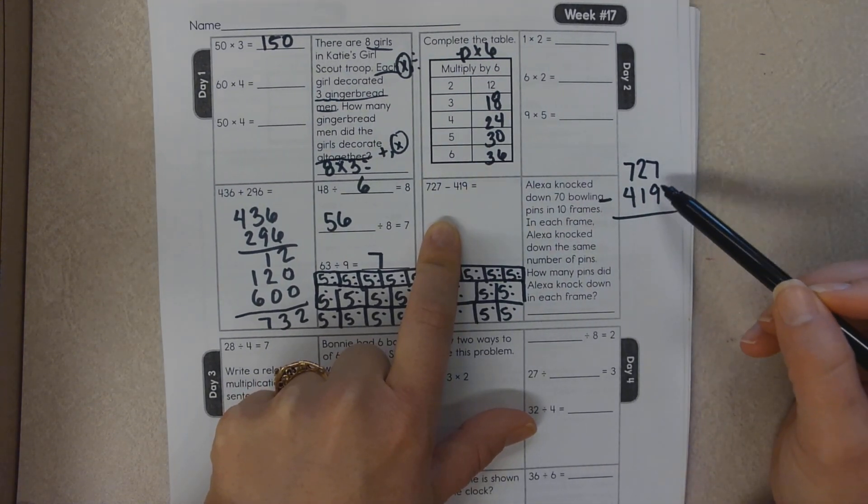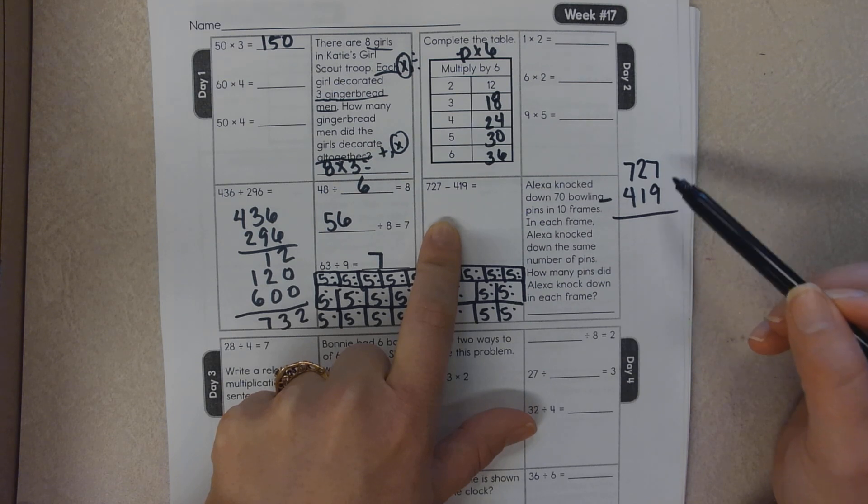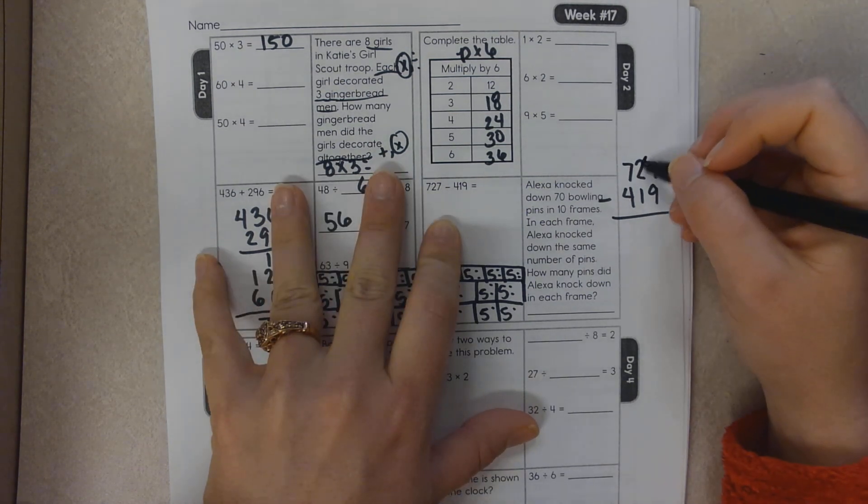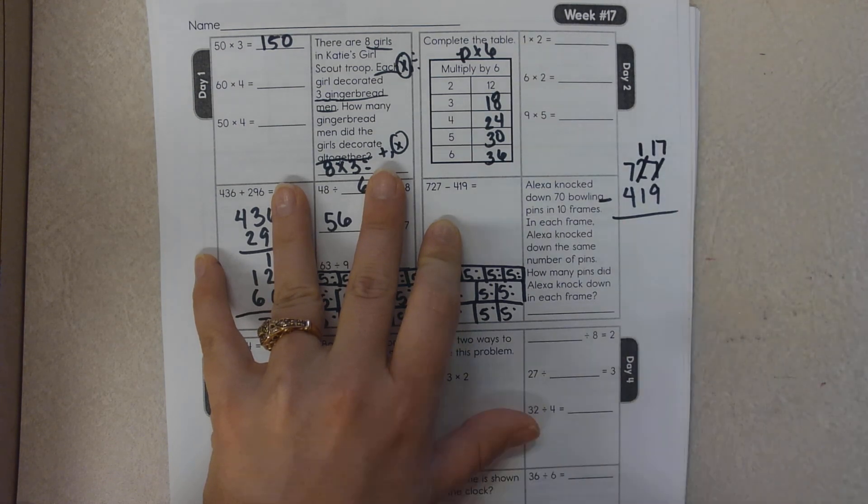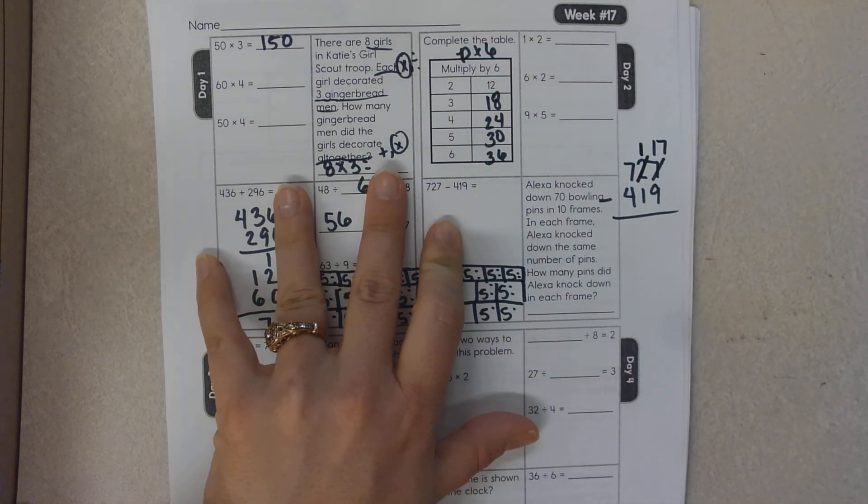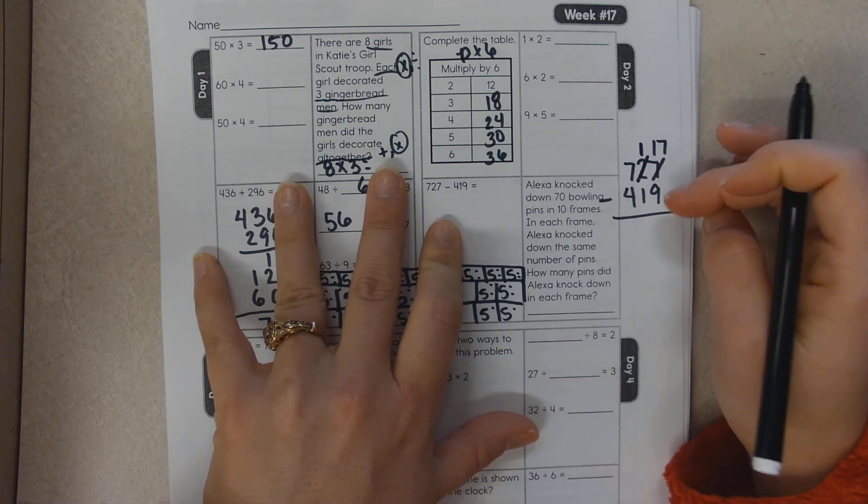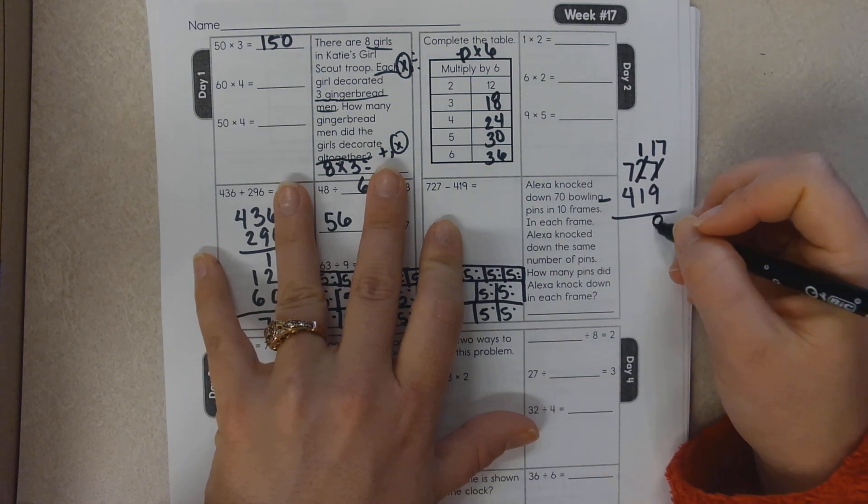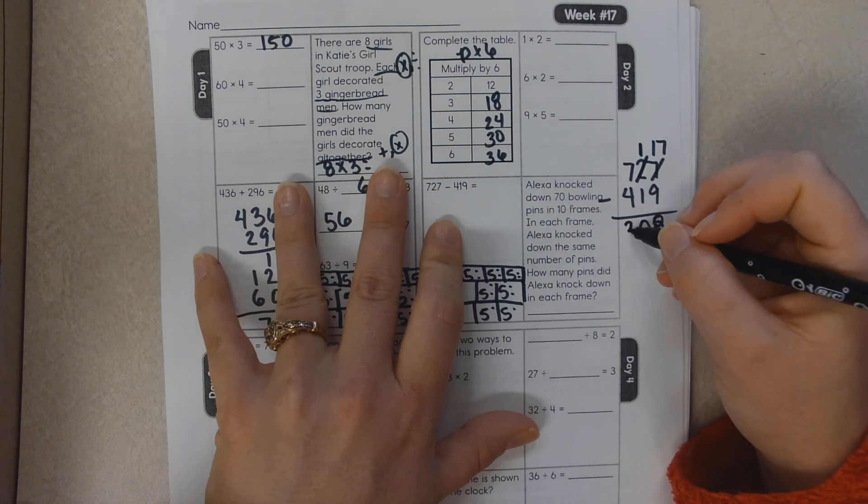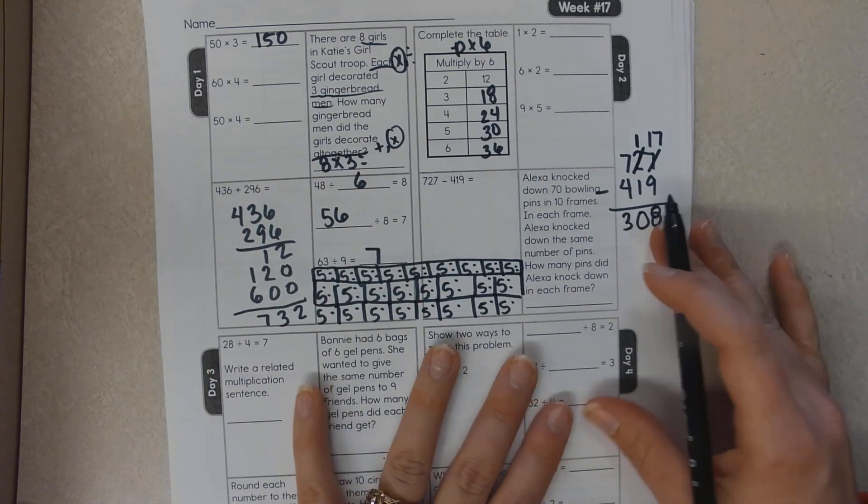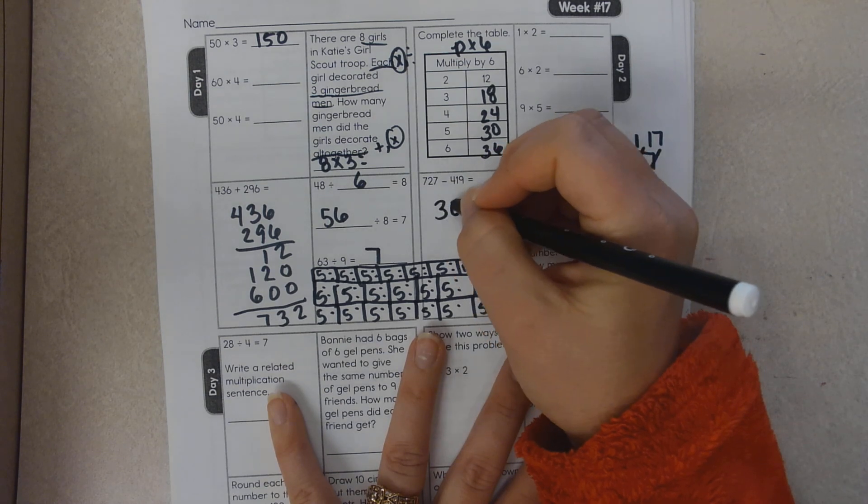Can you take 9 from 7? No. So I mark the 10 and give it to the 1's place. 10 plus 7 is 17. 17 take away 9 is 8. 1 take away 1 is 0. 7 take away 4 is 3. So my answer is 308.